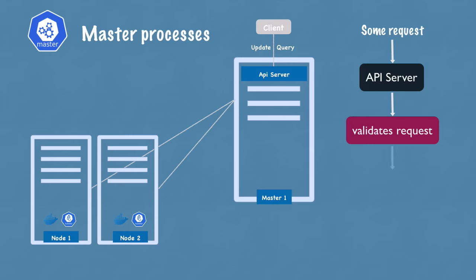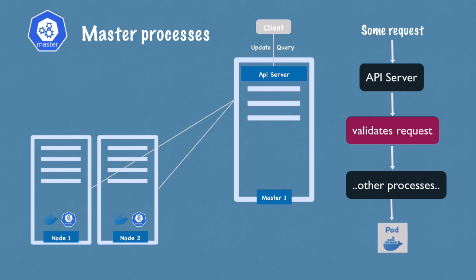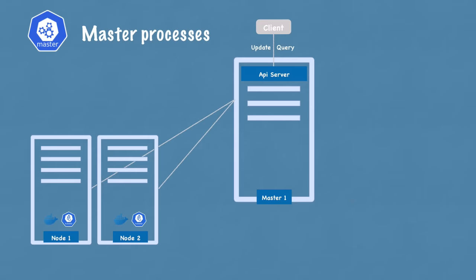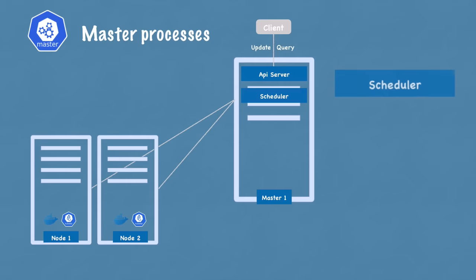Whenever you want to schedule new pods, deploy new applications, create new services or any other components, you talk to the API server on the master node. The API server validates your request and, if everything is fine, forwards your request to other processes to schedule the pod or create the component you requested. If you want to query the status of your deployment or cluster health, you make a request to the API server and it gives you the response — which is good for security because you just have one entry point into the cluster.